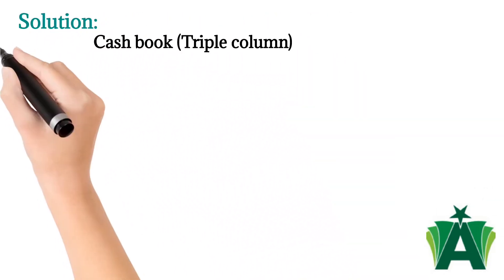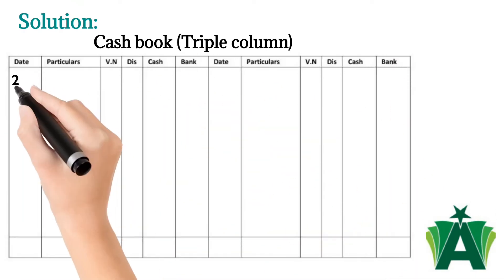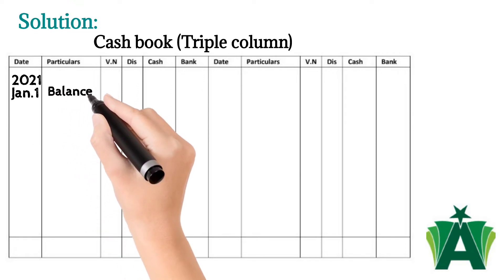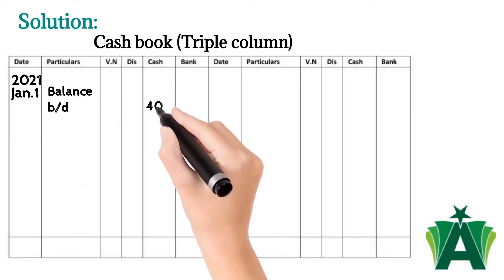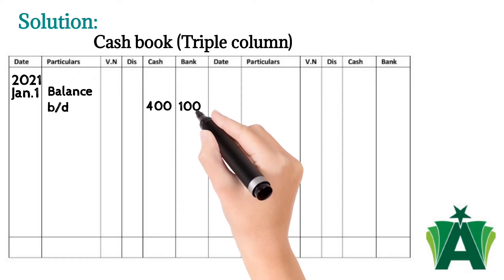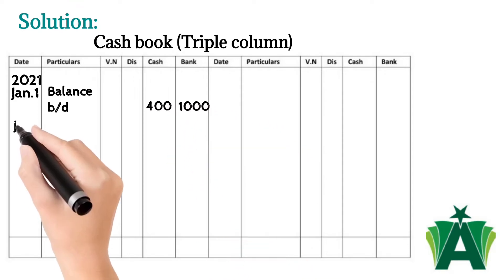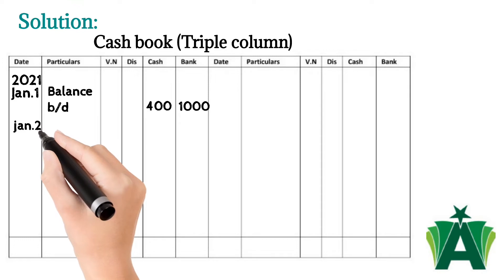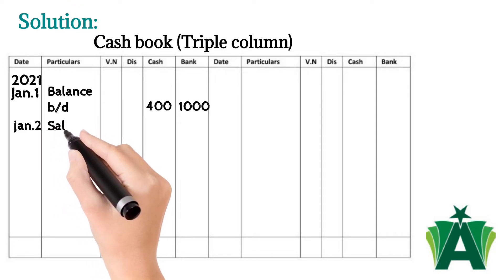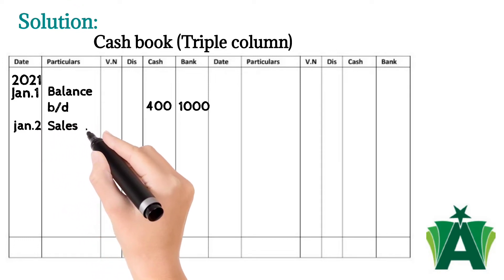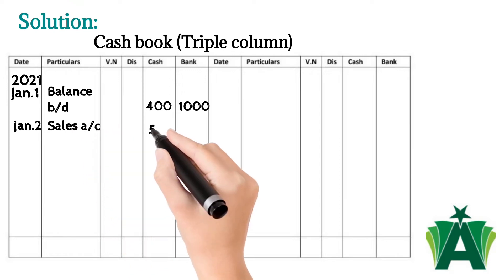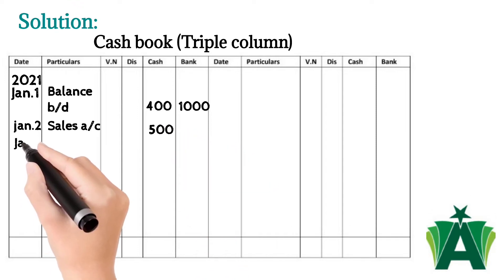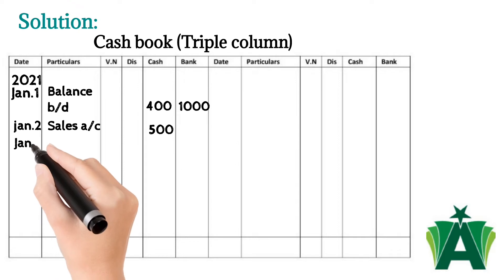Solution: January 1st — balance of cash $400 and bank balance $1,000. The debit balance of cash is recorded in the cash column of the cash book, and bank balance is recorded on the debit side in the bank column. January 2nd — cash sales $500. Here two accounts are involved: cash account (debit) and sales account (credit). Cash account is recorded in the cash column of the cash book with reference to sales account.